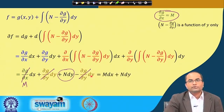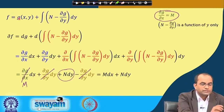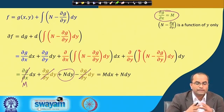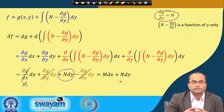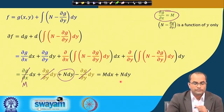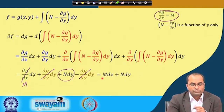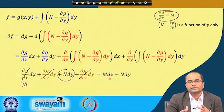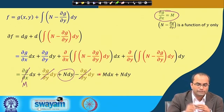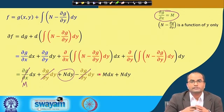So df = M dx + N dy, which is what we wanted to show. There exists an f — once we assume the condition ∂M/∂y = ∂N/∂x holds — such that the differential of f is exactly M dx + N dy. We have now shown that the necessary and sufficient condition for M dx + N dy to be exact is ∂M/∂y = ∂N/∂x.